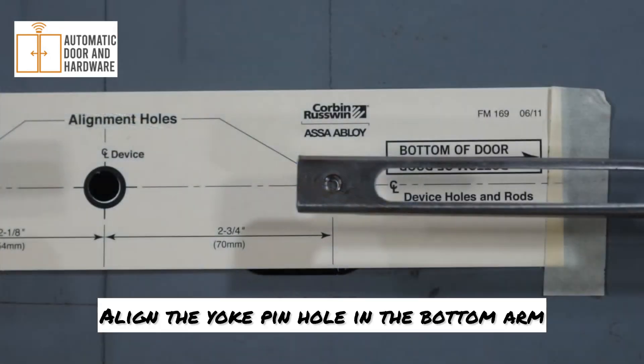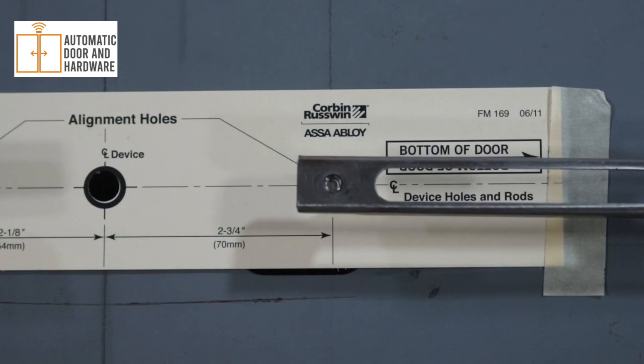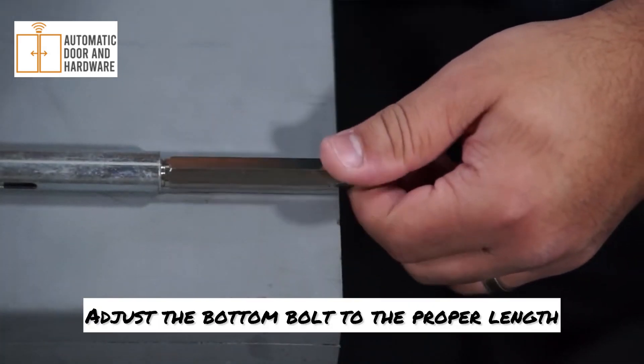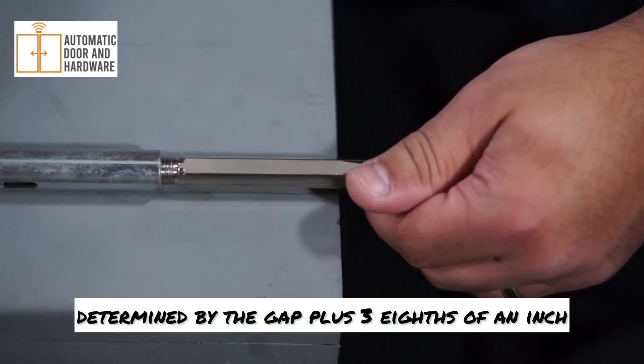Align the yoke pin hole in the bottom arm and bracket assembly with the alignment hole in the rod setup gauge. Adjust the bottom bolt to the proper length, determined by the gap plus three-eighths of an inch.